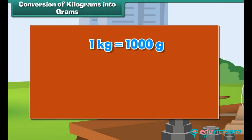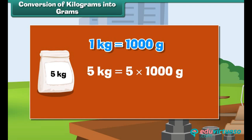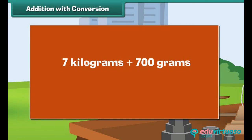Conversion of kilograms into grams: 1 kilogram is equal to 1000 grams. Therefore, the weight of a 5 kg rice bag can be calculated as: 5 kg equals 5 into 1000 grams, which equals 5000 grams.